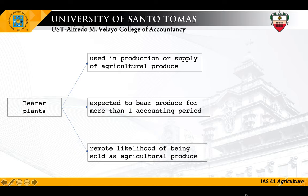Additionally, when bearer plants are no longer used to bear produce, they might be cut down and sold as scrap — for example, for use as firewood. Such incidental scrap sales would not prevent the plant from satisfying the definition of a bearer plant. This is common in plantations: for example, in a mango plantation, old mango trees that no longer bear fruit are cut down and sold as scrap. But the standard is clear — such incidental scrap sales would not prevent the plant from satisfying the definition of bearer plant.